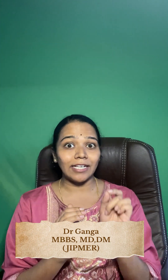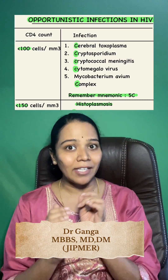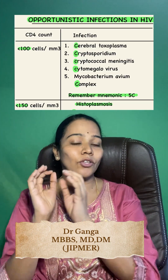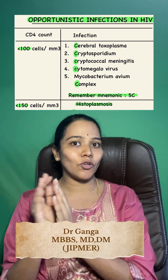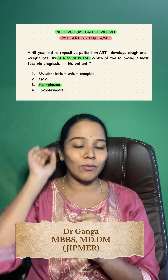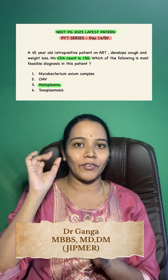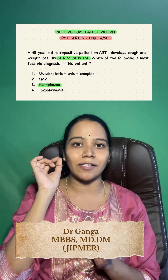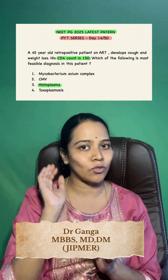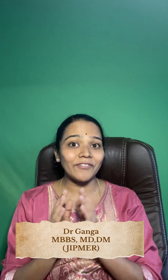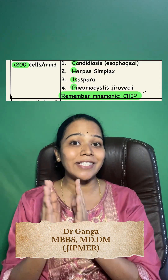If the question says CD4 is less than 150, the answer is Histoplasma. For example, if CD4 is mentioned as less than 150, go directly to Histoplasma as your answer.